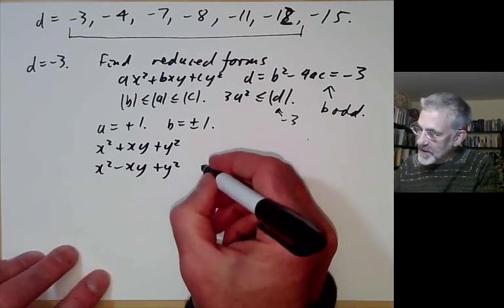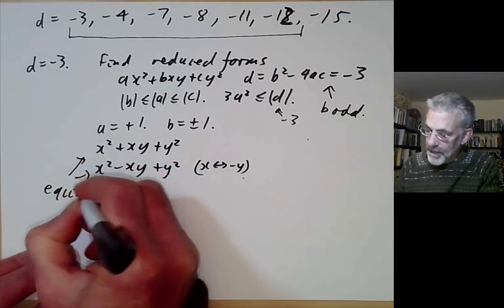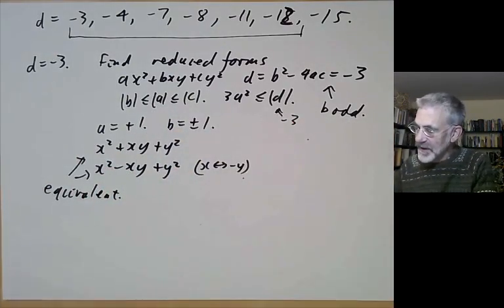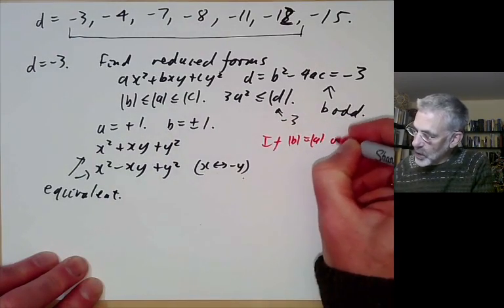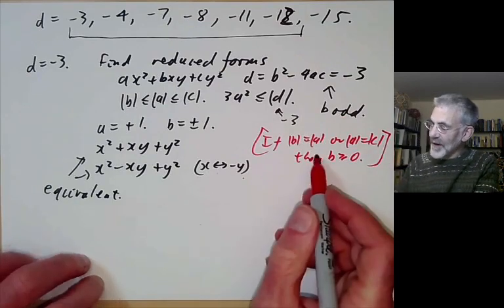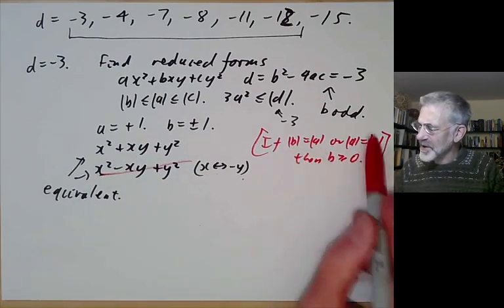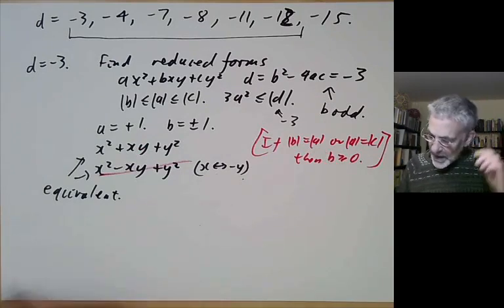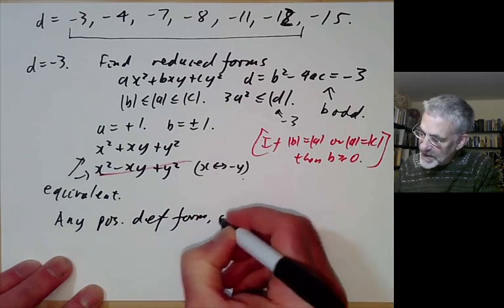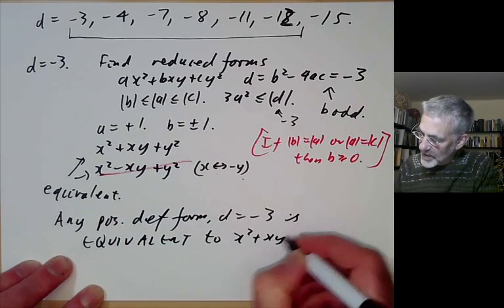People sometimes add an extra condition to the definition of reduced: if b = a or a = c, then b ≥ 0. Adding this condition already eliminates one of the forms. But this condition is a little fussy and difficult to remember. So we've seen that any positive definite form with d = −3 is equivalent to x² + xy + y².